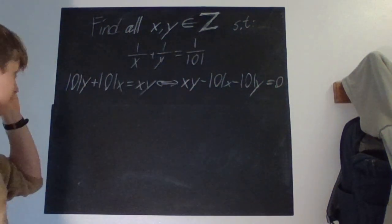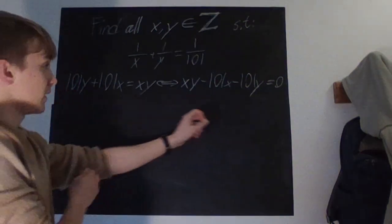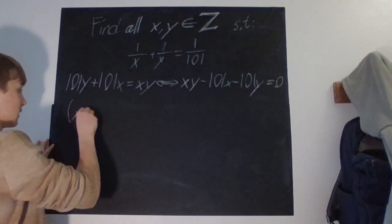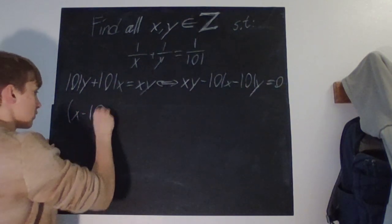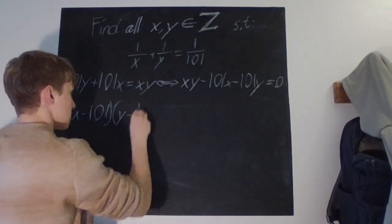Now, if you know your factorizations, you can factor this as (x - 101) times (y - 101).